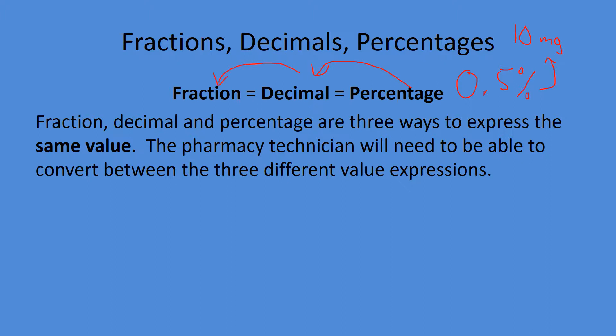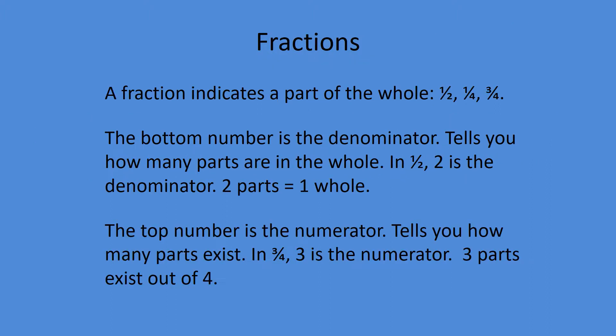What is a fraction? Well, you've probably seen it: two numbers, one on top of the other. The top number is called the numerator and the bottom number is the denominator. The numerator tells you how many parts exist and the denominator tells you how many parts there are. For example, three fourths means there are four parts that exist in the whole, and three of them exist.